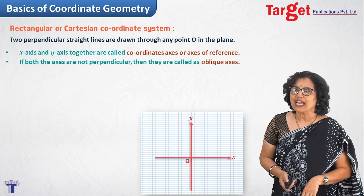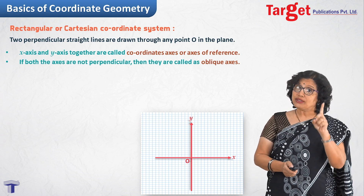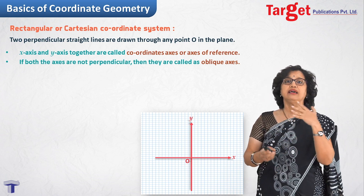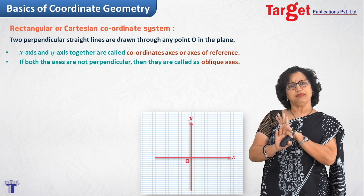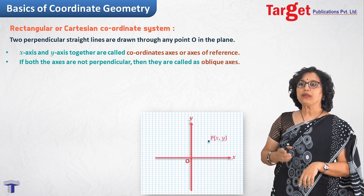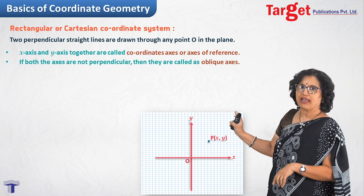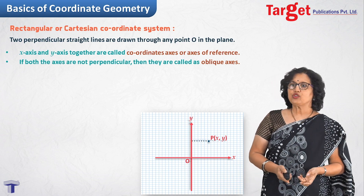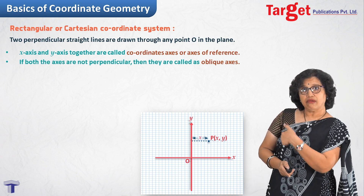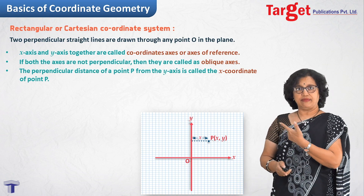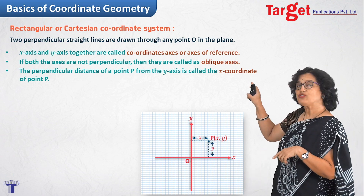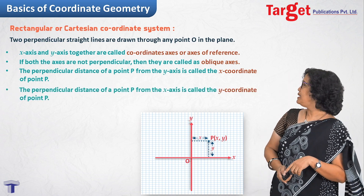Before placing a point, make sure the axes are perpendicular — if they are not, they are called oblique axes. By default, we take the Cartesian coordinate axes. We plot a point P with coordinates (X, Y). X is the distance of the point from the vertical axis (Y axis), and Y is the vertical distance of the point from the X axis, called the Y coordinate.